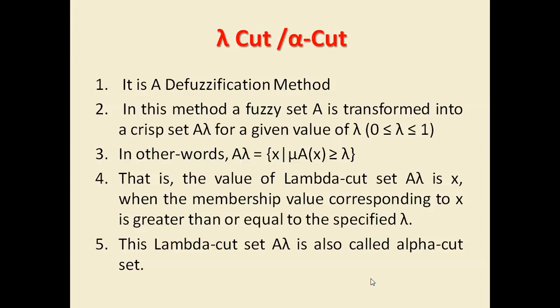Defuzzification is the process by which we can convert fuzzy sets into crisp set. And alpha cut and lambda cut are basically a method by which we can convert a fuzzy set into crisp set.